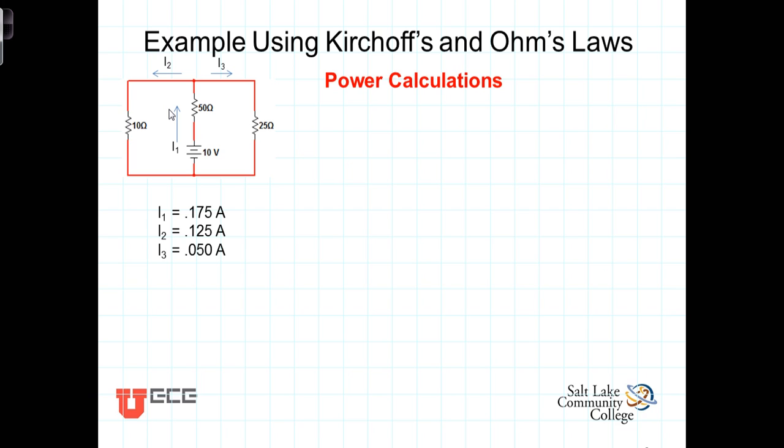Now just a couple of reminders. First of all, P is equal to I times V if the current and the voltage are referenced so that the current is flowing into the positive terminal and out the negative terminal. So P is positive I times V if it's referenced this way.